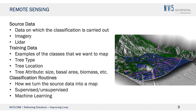The second thing is the training data. This stuff isn't magic — we don't just throw it all in the computer and have it spit out the answers. We actually have to train the computer to understand what we're looking for, bringing examples of what we want to map. In this case we're particularly interested in trees, so we need to identify different types: here's an oak tree, here's an ash tree, here's a birch tree. We also need to know where they are. The computer won't be able to find trees if we don't know their location. Other things we may want to know include a tree's height, canopy area, basal area, or the amount of carbon stored. We have to bring a large amount of training data of what actually exists on the ground.